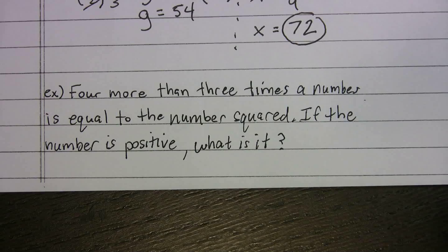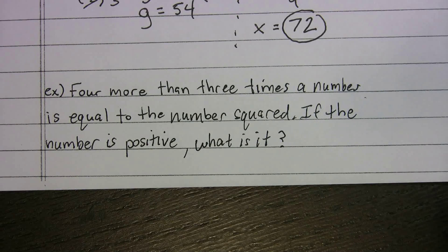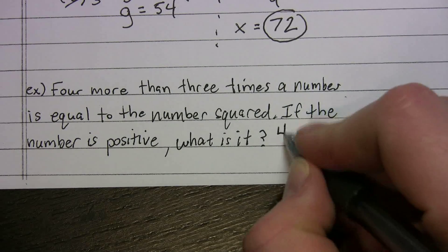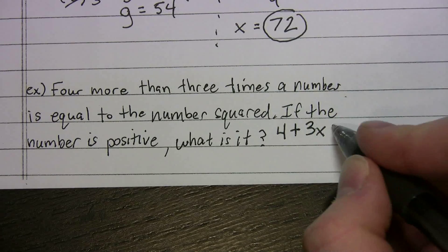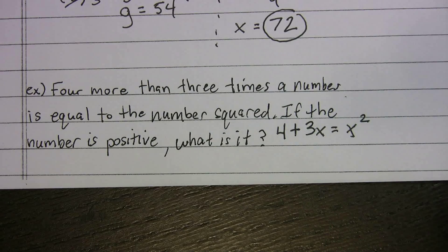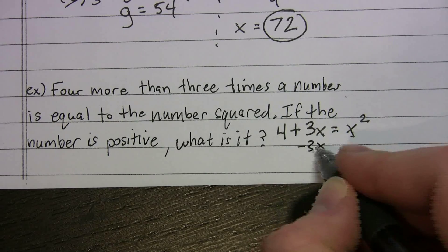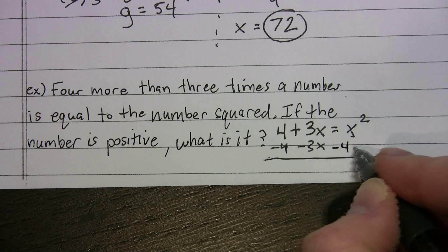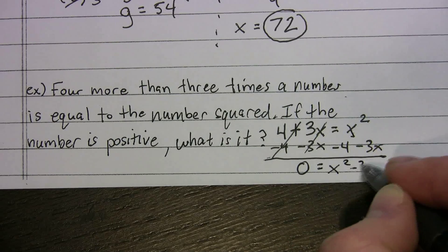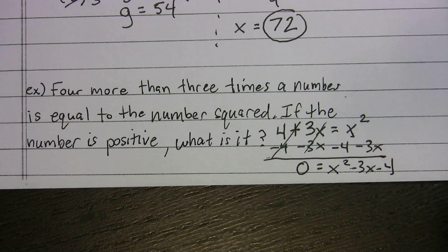The next problem says: 'Four more than three times a number is equal to the number squared. If the number is positive, what is it?' Translating: 'four more than three times a number' becomes 4 + 3X, and that equals X². So the equation is 4 + 3X = X². I noticed this looks like a quadratic, so I'll subtract 3X and 4 from both sides to get X² minus 3X minus 4 = 0.